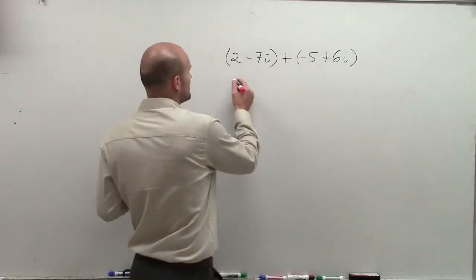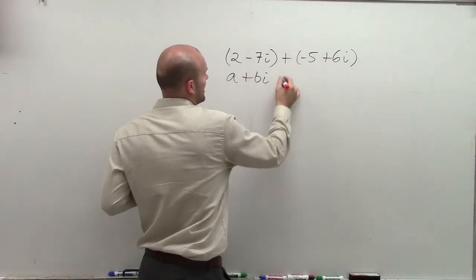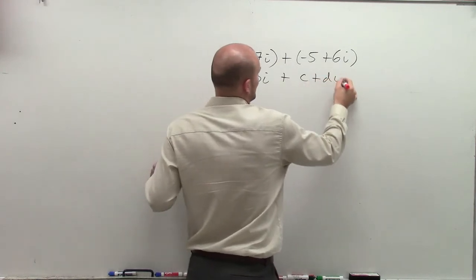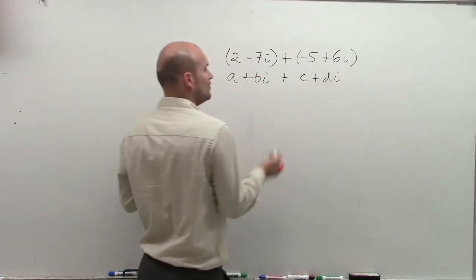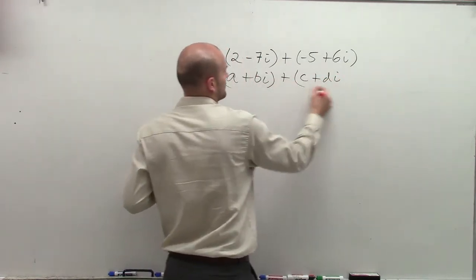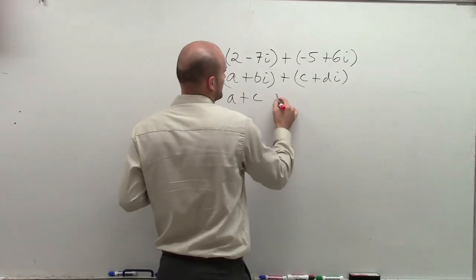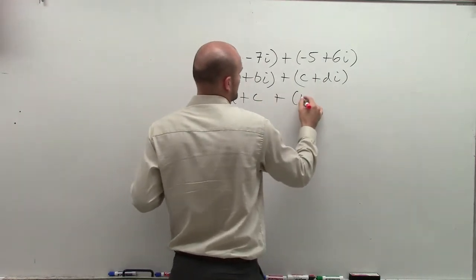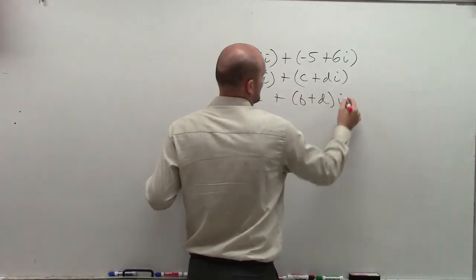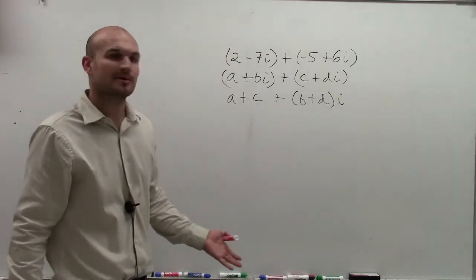The algorithm goes like this: a plus bi plus c plus di. Remember, you can only add like terms. So I can only say a plus c, plus b plus d times i. So that's exactly what I'm going to do.